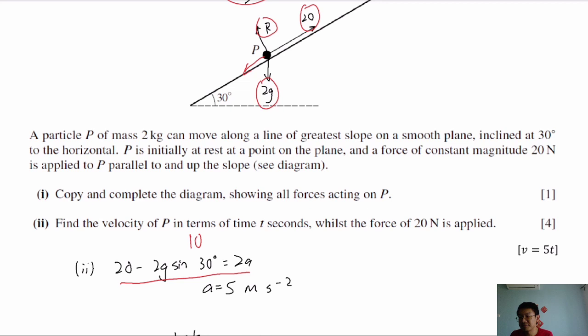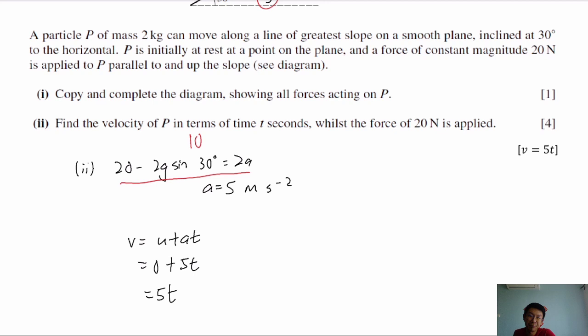For part 2, find the velocity of P in terms of time whilst the 20 N force is applied. We find V knowing that initial velocity U = 0, since the particle is initially at rest, and A = 5. Using V = U + AT, U is 0, A is 5, and T is left as T since they want velocity in terms of T. So we get V = 5T.